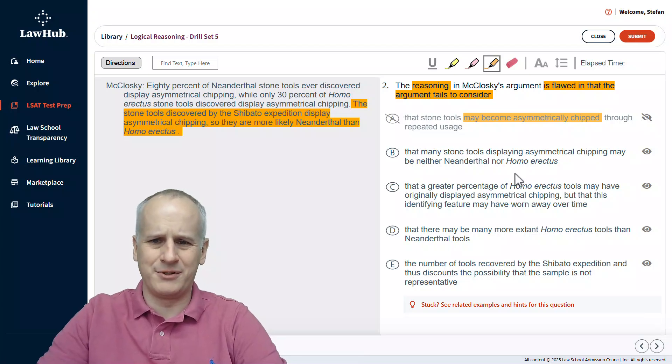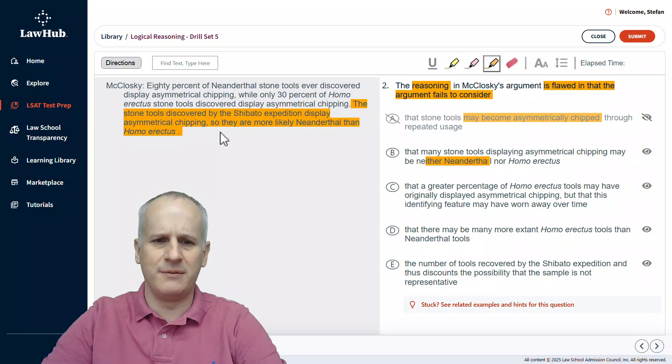Choice B. That many stone tools displaying asymmetrical chipping may be neither Neanderthal nor Homo erectus. We're concerned only with the comparison in the conclusion that they are more likely Neanderthal than Homo erectus. What would be neither is completely irrelevant to the argument presented by McCloskey, so we can eliminate B, hopefully, almost immediately as well.